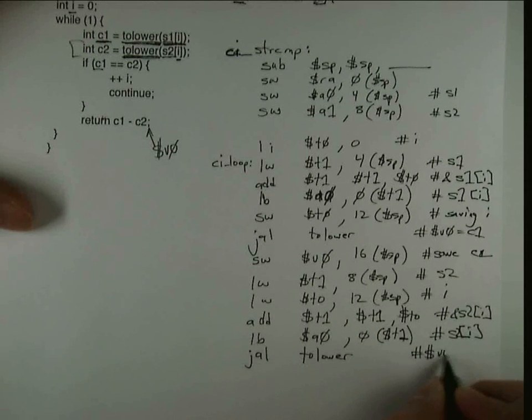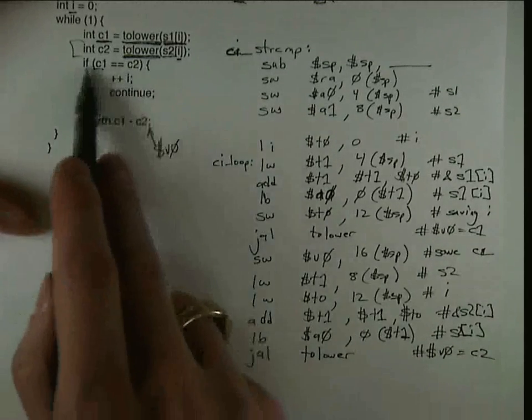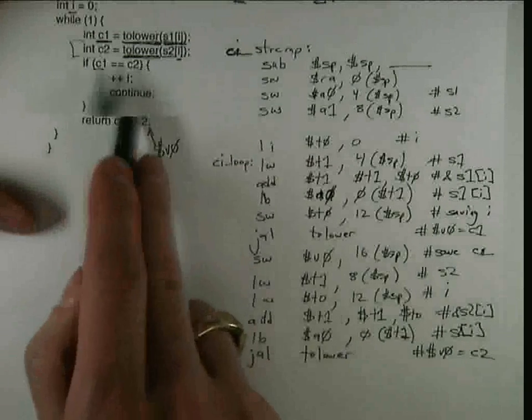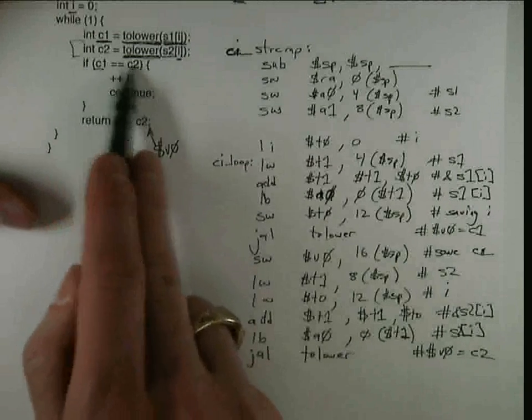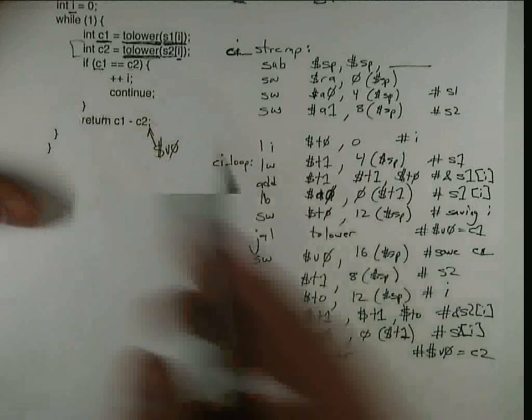And this time, when it returns, V0 has the C2 value. So when I return from there, now I'm ready to do this if statement. And again, I'm going to use my standard rule for ifs. I'm going to invert the condition to skip over the loop.